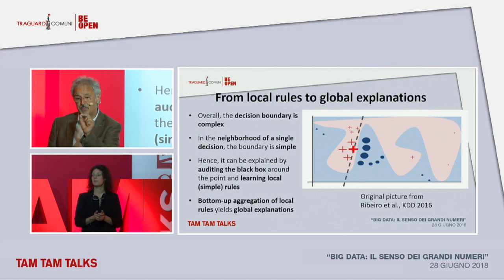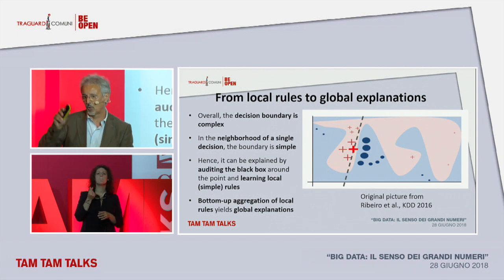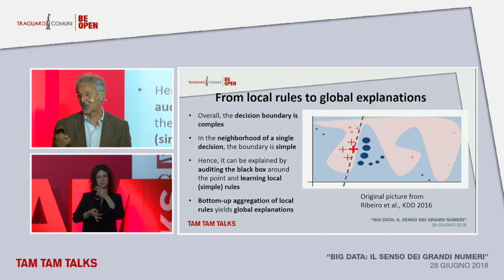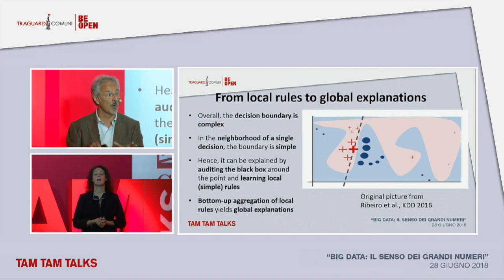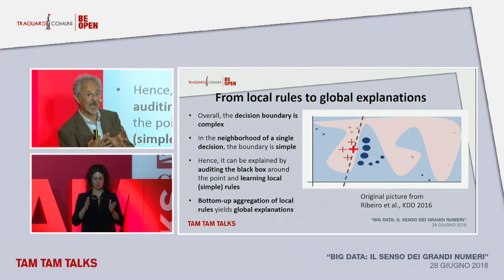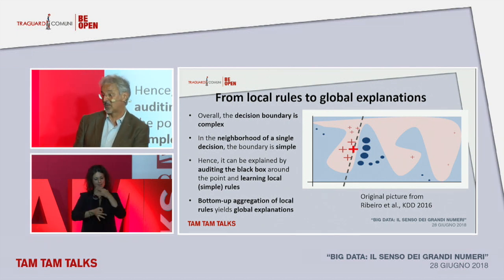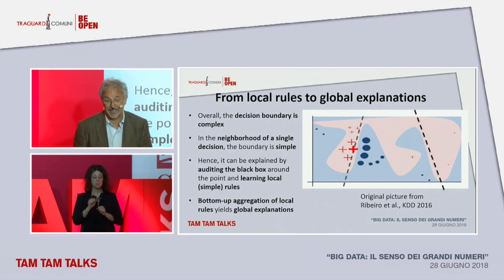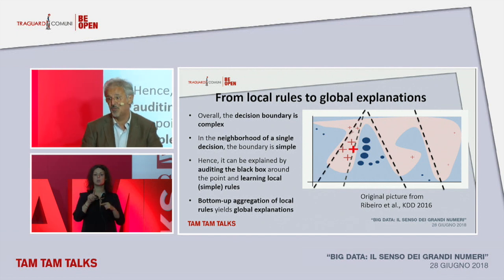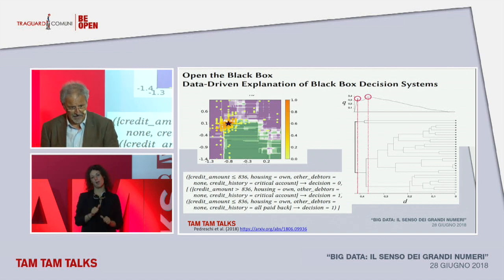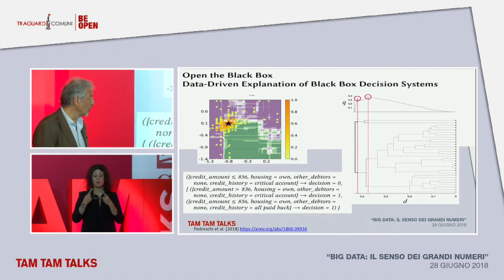But if you ask: why was a loan denied to this gentleman? — possibly the border between the two decisions is simple locally. If you create a local model that explains the behavior for this subject, you may have a locally simple decision, and you can put together many of them to build up an understandable model. This is the pathway we are working on.